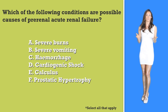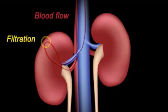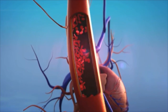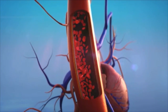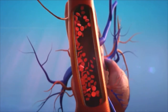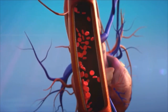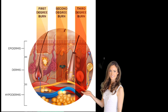Pre-renal refers to renal failure due to interference with renal blood flow. A word you will commonly see in place of blood flow is perfusion. So when you see the term pre-renal, think about things that can cause low blood volume or decreased blood flow to the kidneys.